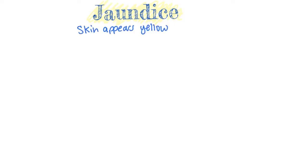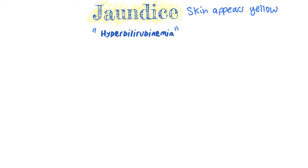Jaundice is a term used to describe yellowing of the skin. It is actually hyperbilirubinemia, which is high levels of bilirubin in the blood. Another word for jaundice is icteric — I-C-T-E-R-I-C — and that's a word that's used to describe jaundice as well.